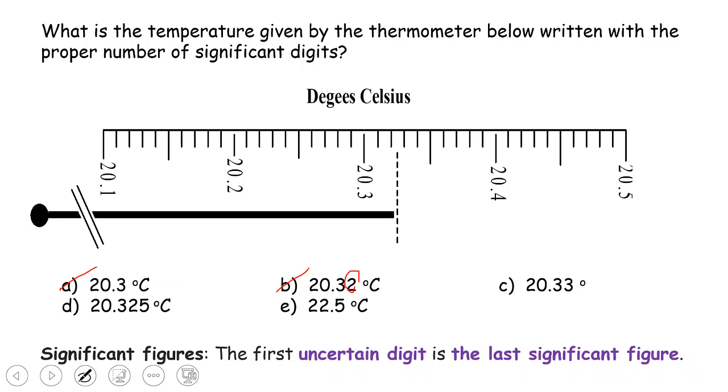And so is C because that's the same as B, the second decimal place should be certain. But here, it is the last significant figure. Then that means that supposed to be uncertain, which is not right.